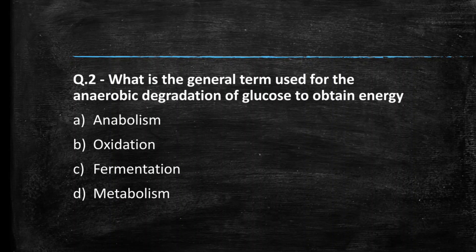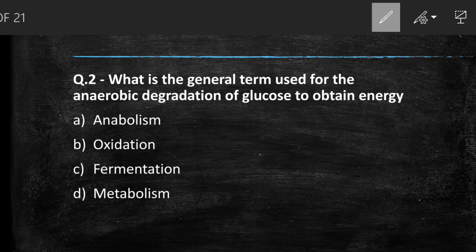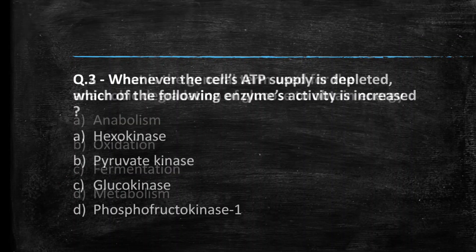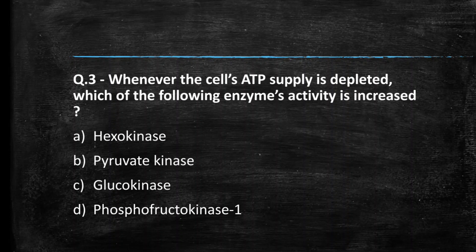Next question: what is the general term used for the anaerobic degradation of glucose to obtain energy? (A) Anabolism, (B) Oxidation, (C) Fermentation, (D) Metabolism. The right answer is option C, fermentation.